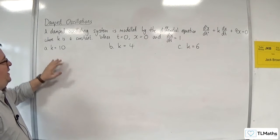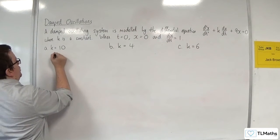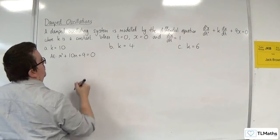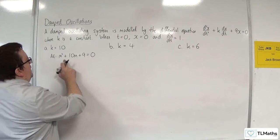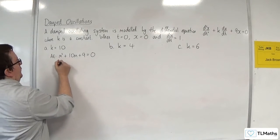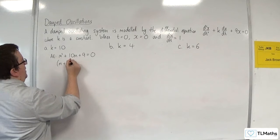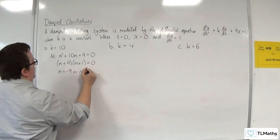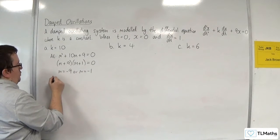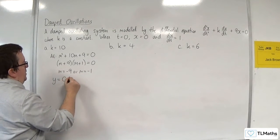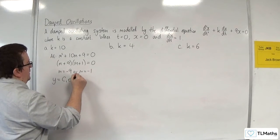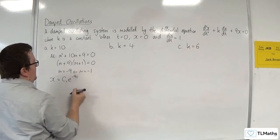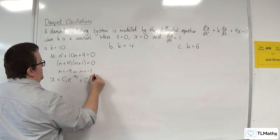Let's look at k equals 10 first. The auxiliary equation would be m² + 10m + 9 = 0. This can be factorised as (m + 9)(m + 1) = 0, giving m = −9 or m = −1. So our general solution is x = c₁e^(−9t) + c₂e^(−t).